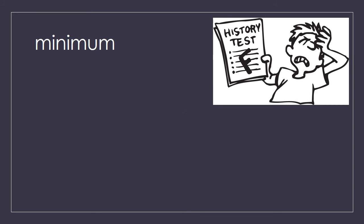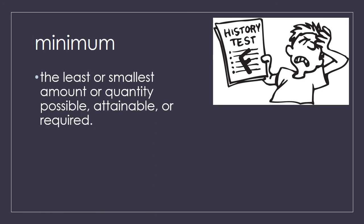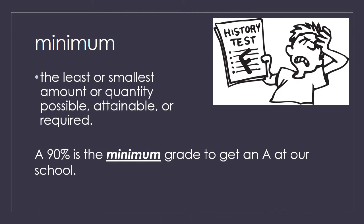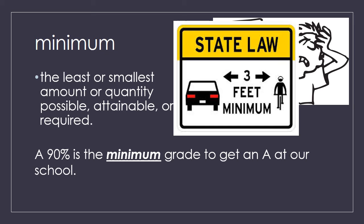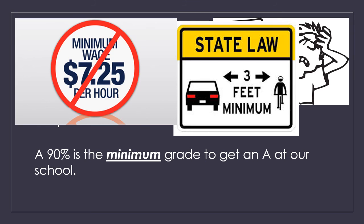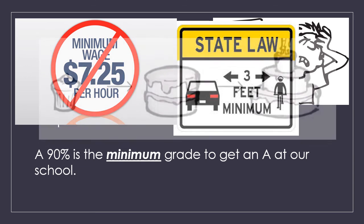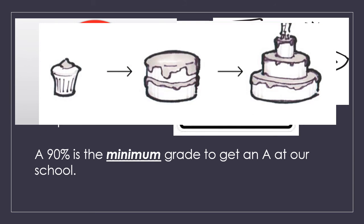The next word is minimum. Minimum means the least or smallest amount or quantity possible, attainable, or required. A 90% is the minimum grade to get an A at our school. In America, we have a minimum wage — that means the lowest amount of money a company can pay their workers. The minimum wage is currently $7.25.